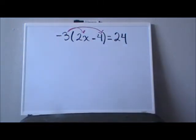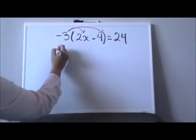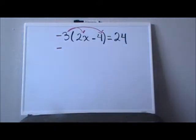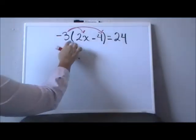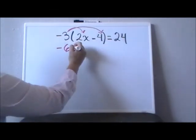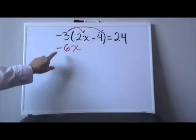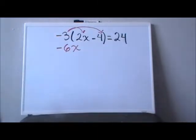We're going to start step by step. First of all, we start with our signs. Negative and positive gives me a negative. Now I'm going to multiply the numbers. Three times two gives me a six, and my x is going to stay the same. Then my negative three will multiply the negative four.